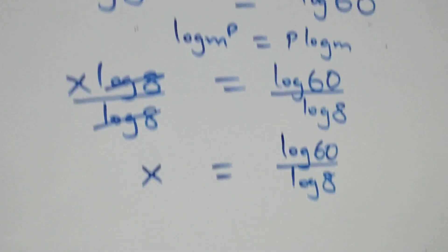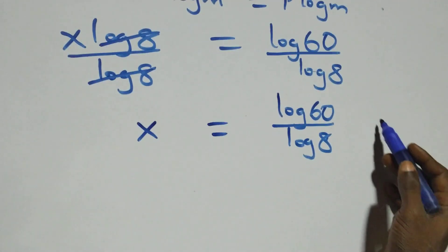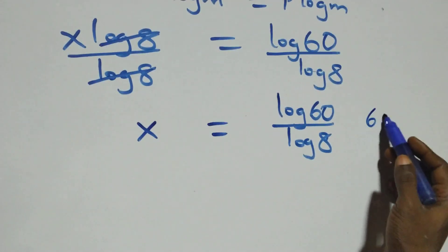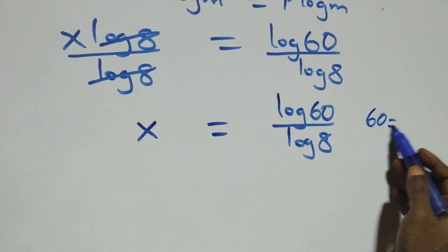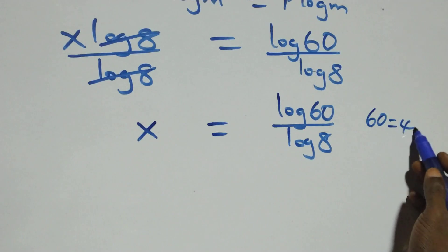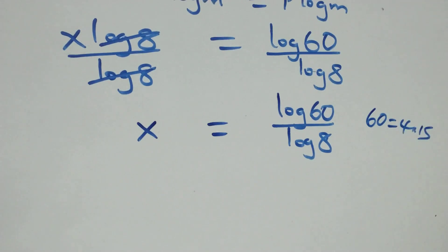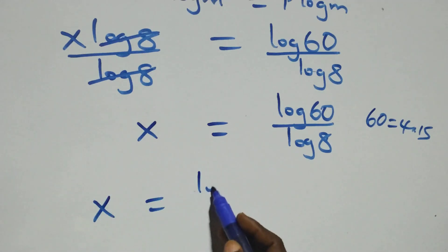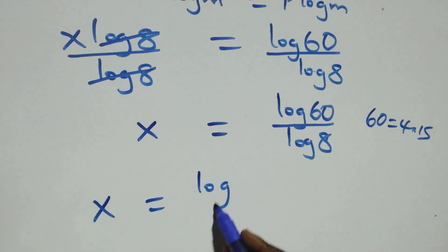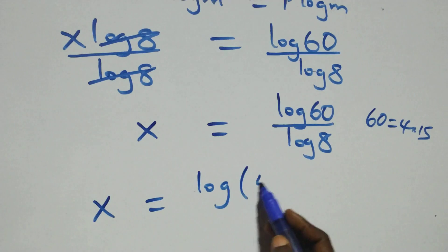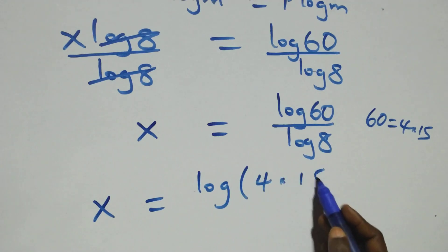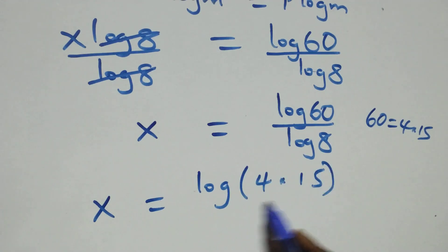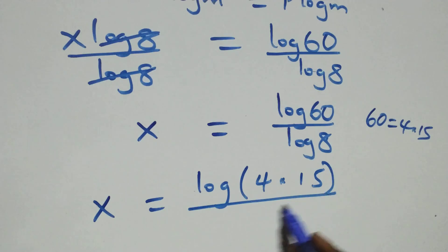Then next step here, we can express sixty as four times fifteen. That is, all we have here becomes x equals to log of four times fifteen, over log eight.